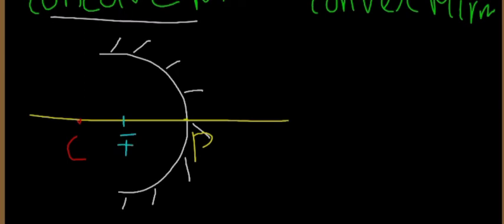The key terms for the mirror are: center of curvature, pole at the middle area, and focus. These are the important points. We also have the principal axis, which is a line parallel to the optical axis. The light ray travels parallel to the principal axis.